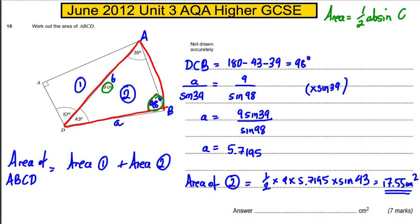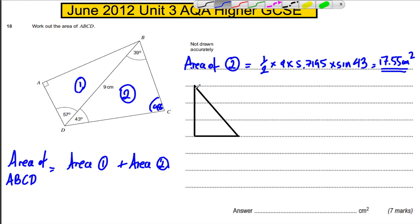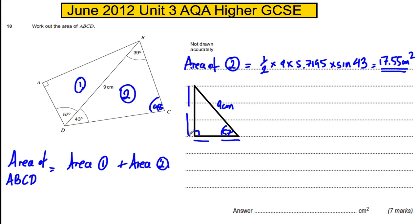Now I want to work out the area of triangle one. I'm going to draw myself a little picture here. I know that's 57 degrees — I'm redrawing this on its side. That's the right angle, this is nine centimetres here. I don't know the other two sides. I could use SOHCAHTOA to work out that side, SOHCAHTOA to work out that side, then do base times height divided by two and get the area.